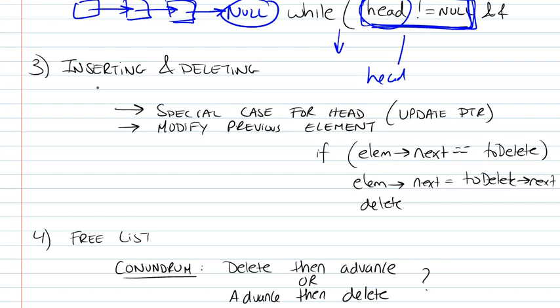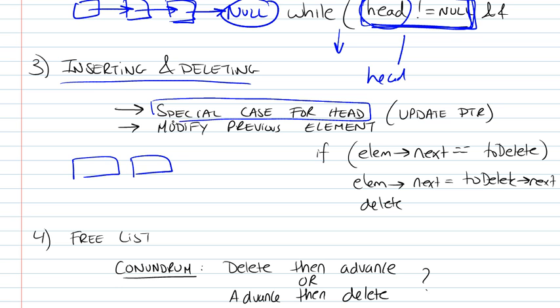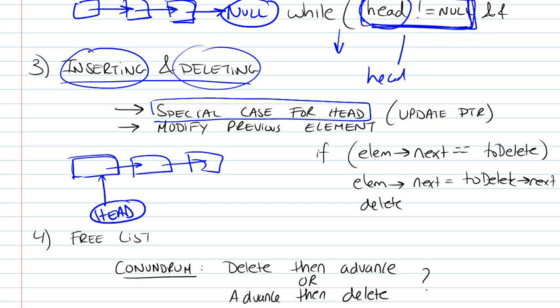The third element is inserting and deleting. When you're going to be inserting and deleting elements from your list, you have to handle two cases. First, there's a special case for the head. If you're going to be deleting the head element then you're going to have to update the head pointer like we said. So this is a special case, and you're going to have to handle it at the beginning of your function that inserts or deletes elements.